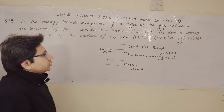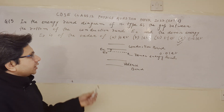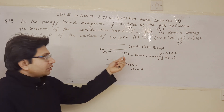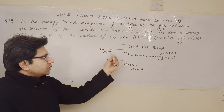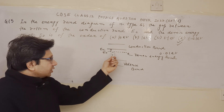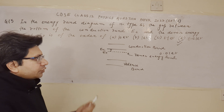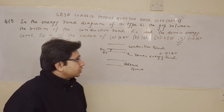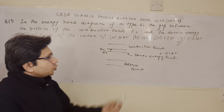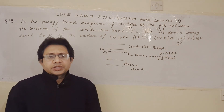In the energy band diagram of an N-type semiconductor, we identify the conduction band and its lower level, and the donor level just below it. The donor level is where electrons reside so that they can gain a little energy to reach the lower level of the conduction band. This is a fact-based question and we should remember that the gap is 0.01 electron volts. So option D is the correct option. I hope you understand the solution. Thank you.